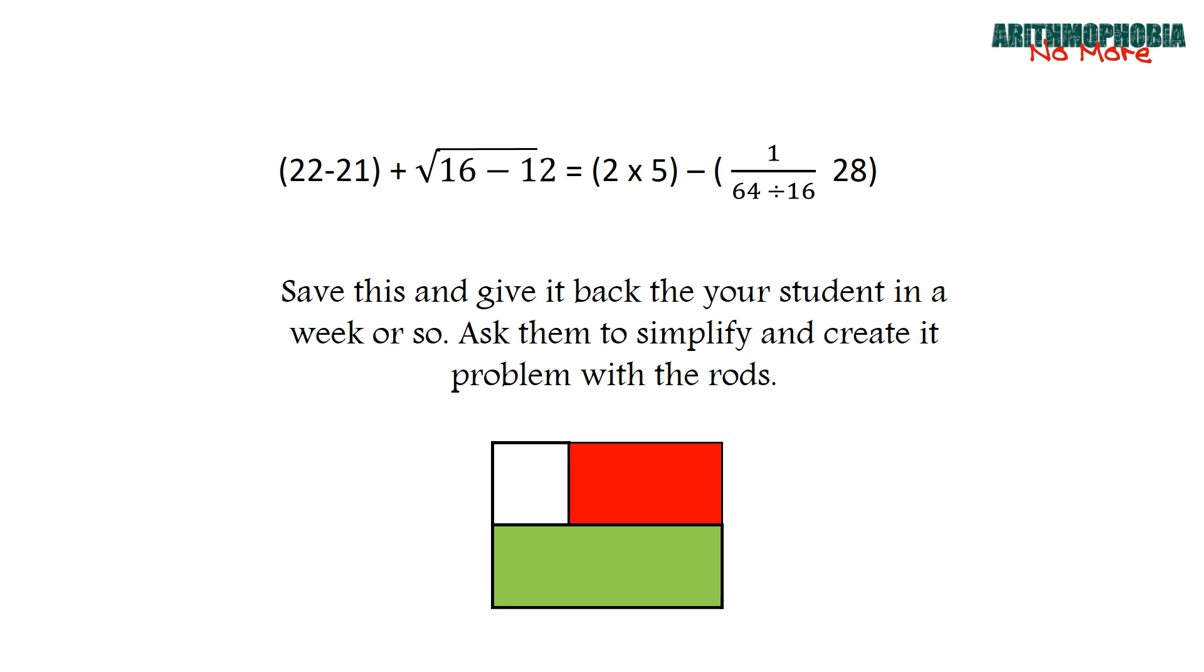1 + 2 = 3. But how cool is (22 - 21) + √(16 - 12) = (2 × 5) - (1 over 64 ÷ 16) × 28? That is way cooler than 1 + 2 = 3, and the children learn.